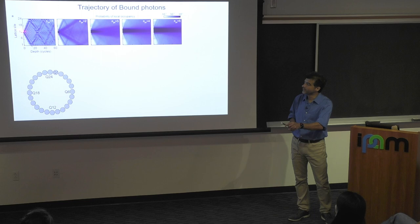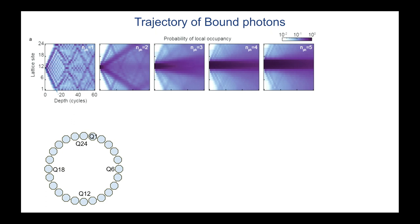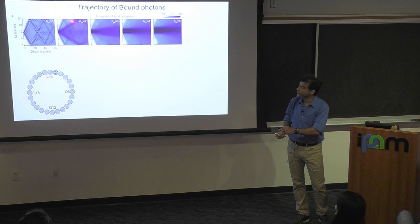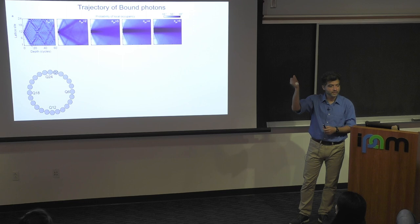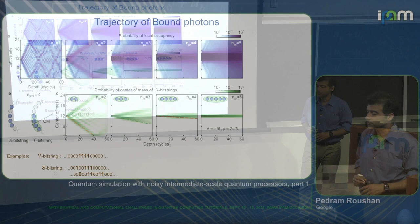Simple results: in a ring of 24 qubits, you excite one qubit and watch how it evolves — after each cycle you take a snapshot, average over many observations. With one excitation there is nothing to bind to, so it's a simple random walk of a lonely particle. When you put two excitations together initially, you can see they start to stay together — the tendency to break off is suppressed. As you put more and more next to each other, you see concentration of color — the probability of finding them next to each other is increased.